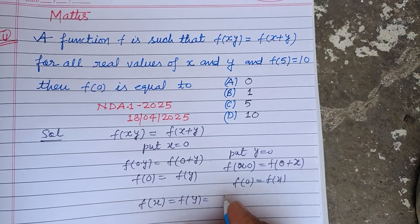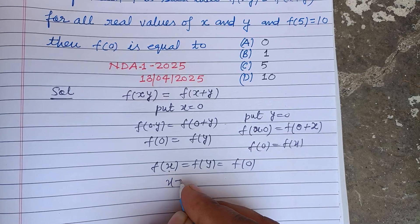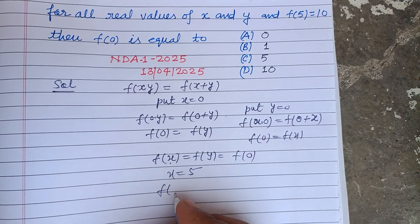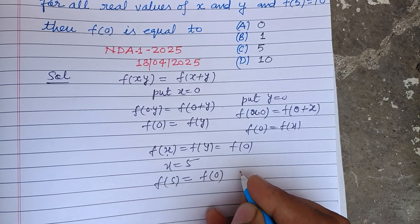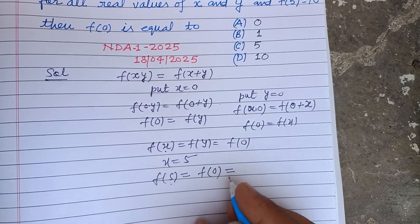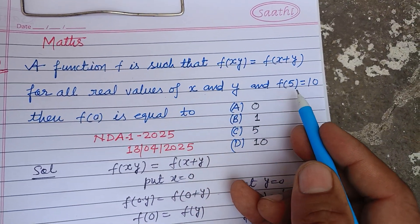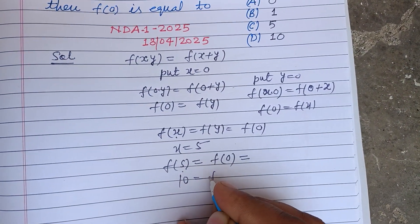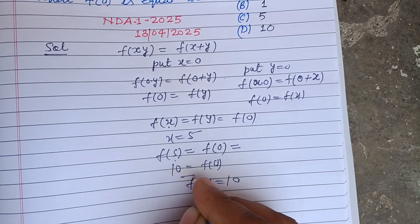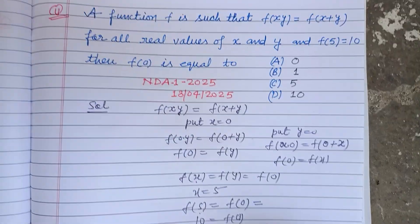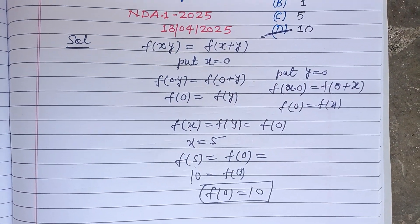If we put x equal to 5, then f(5) equals f(0). And f(5) is given to us as 10, so 10 equals f(0), therefore f(0) equals 10. So 10 is the correct answer, which is found in option D. Therefore option D is correct.